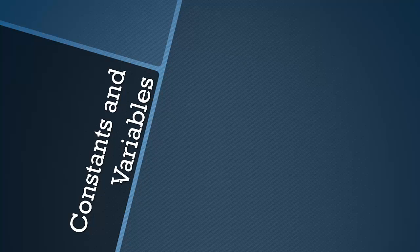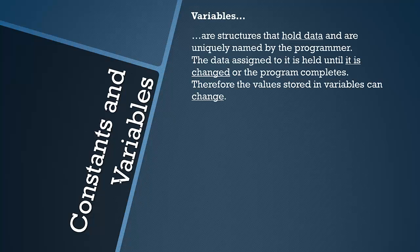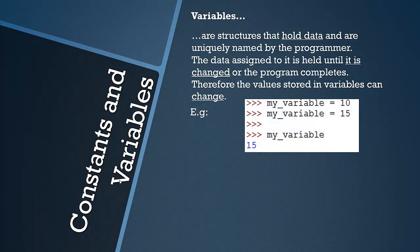Now I'm going to look at constants and variables. A variable is a structure that can hold data which is uniquely named by the programmer. The data assigned to it is held until it is changed or the program completes. Therefore the values stored in variables can change. In this video I'll be using Python as an example programming language. This is more exam based but I'm using it as an example. Here I set a variable as 10, then I change it to 15. When I call this variable, the value returned is 15, which shows that it can change.